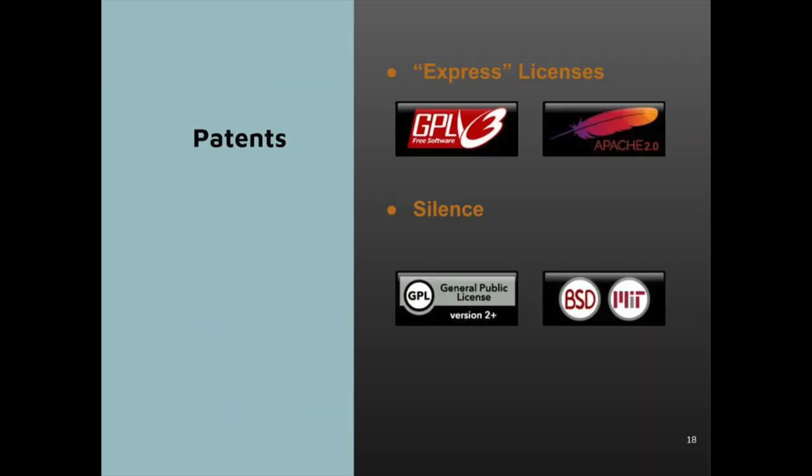Now let's talk a little bit about patents. Open-source licenses come in two varieties: those that contain an express patent license, and those that say nothing about patent licensing. If you have patents that read on the software you're going to release, a license with an express patent grant will give certain patent rights to any recipient of the software. That means you won't be able to prevent those users from practicing your patents in the course of using your software under that open-source license, which means those patents will be hard to enforce in court. If the license says nothing about patents, however, you may still be effectively granting some rights.